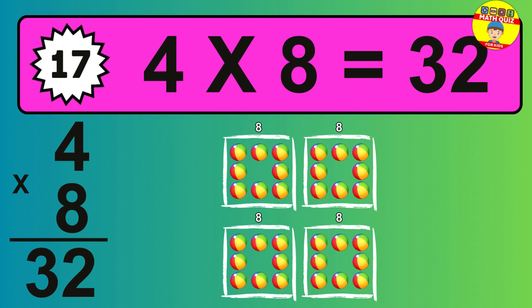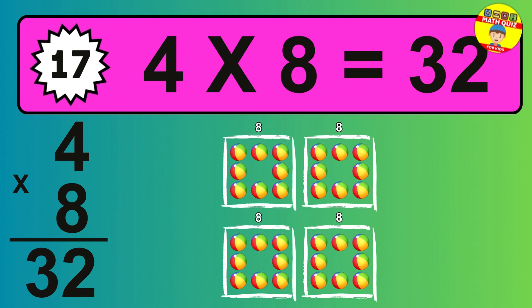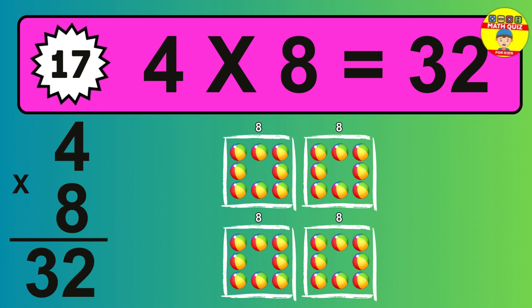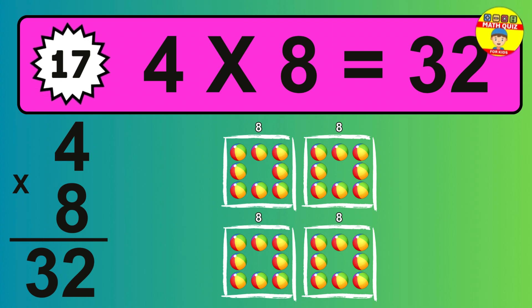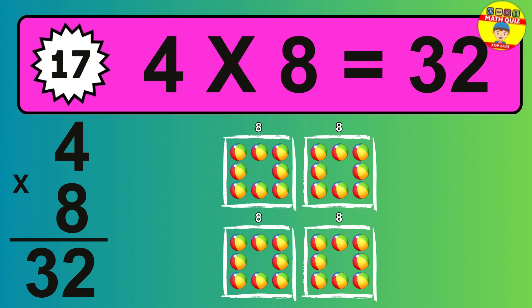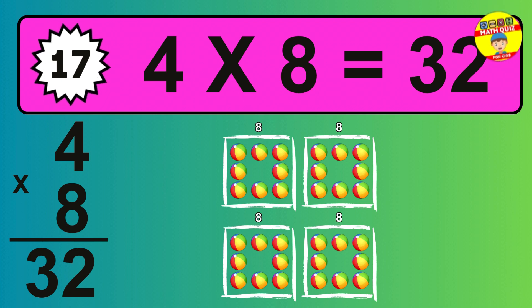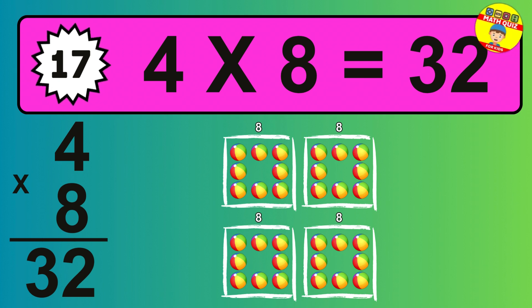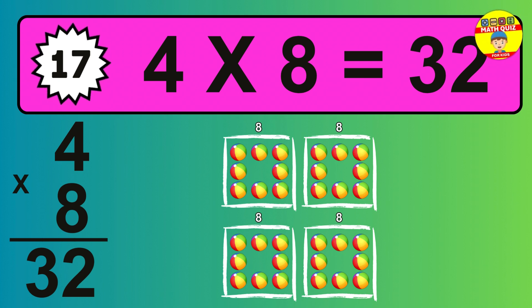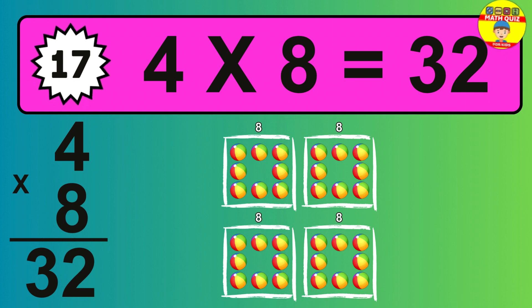Question 17. The answer is 4 times 8 is 32. To calculate, we have 4 groups with 8 balls each one. So how many balls do we have? 32 balls.